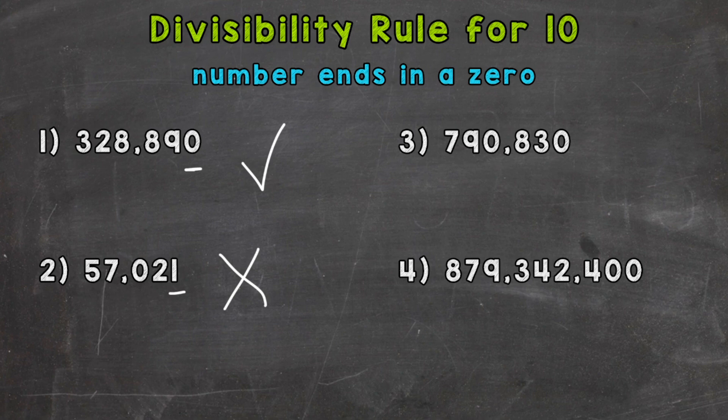790,830. Ends in a zero. That means it's divisible by 10.